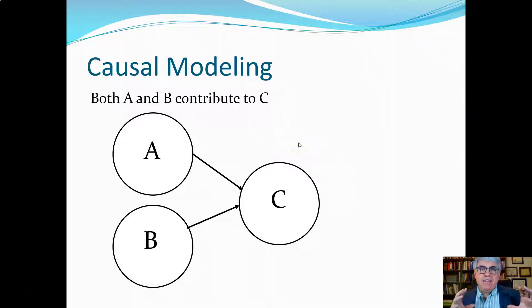Now here's the basic idea of what we're going to be drawing. Each variable is going to be represented by a circle and an arrow going to a variable means that the variable that is the origin of the arrow causes the other variable. So here we have both A and B contribute to C.